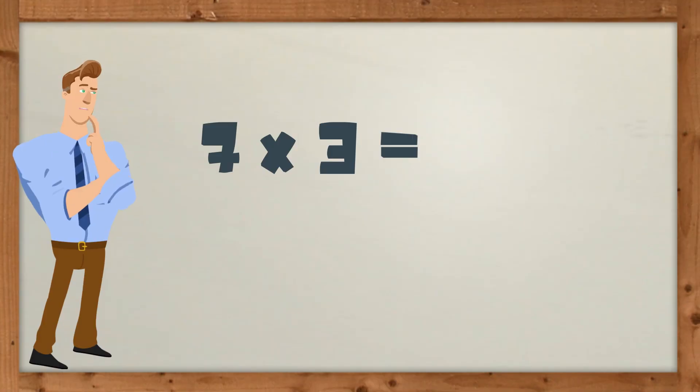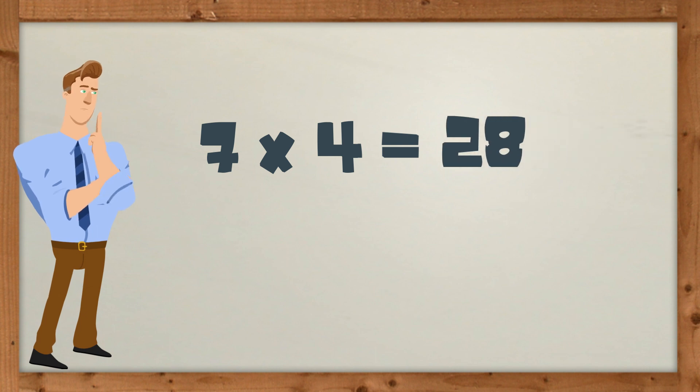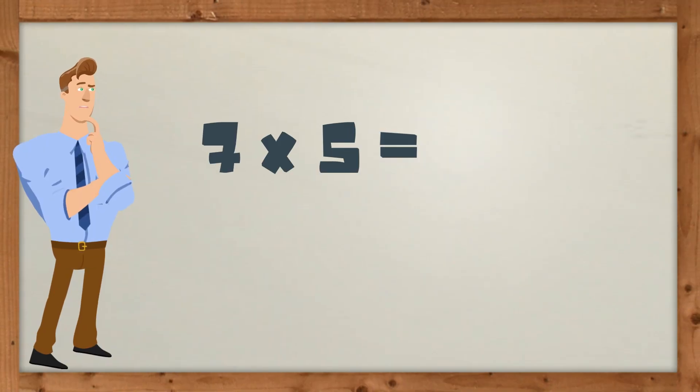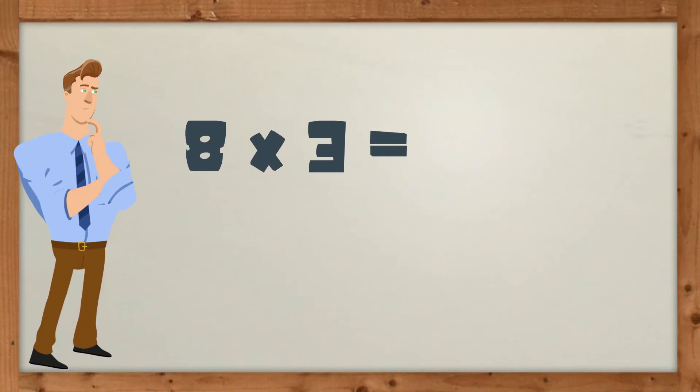7 x 3 = 21. 7 x 4 = 28. 7 x 5 = 35. 7 x 6 = 42. 8 x 3...